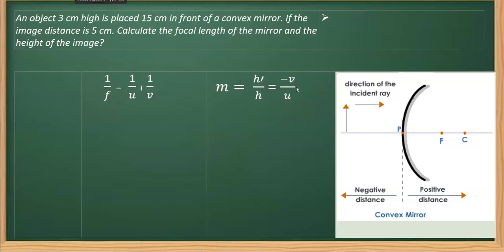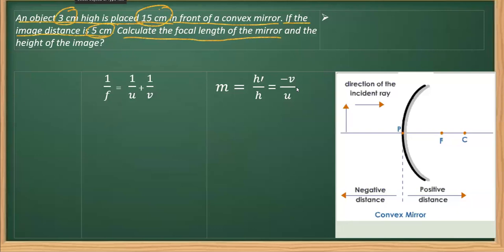This is a numerical based on a convex mirror. An object which is 3 centimeter high is placed at a distance of 15 centimeter in front of a convex mirror. If the image distance is 5 centimeter, we have to calculate the focal length and the height of the image.